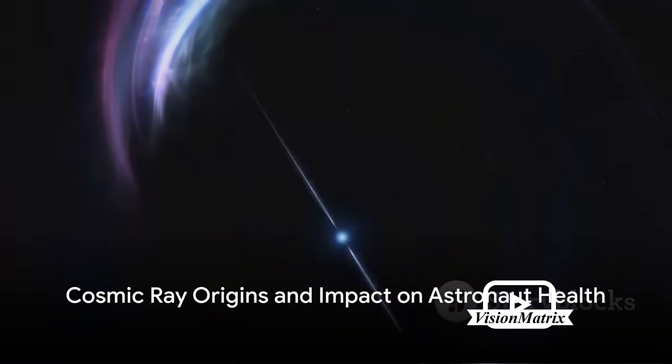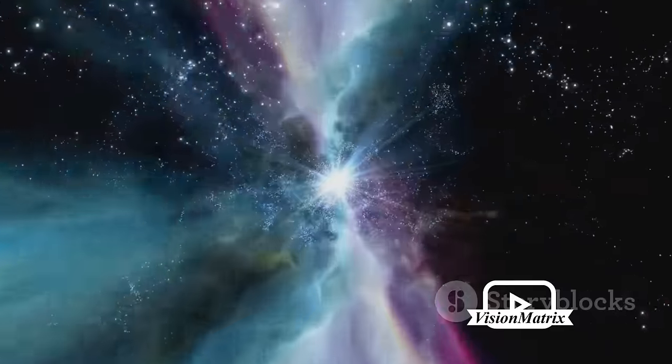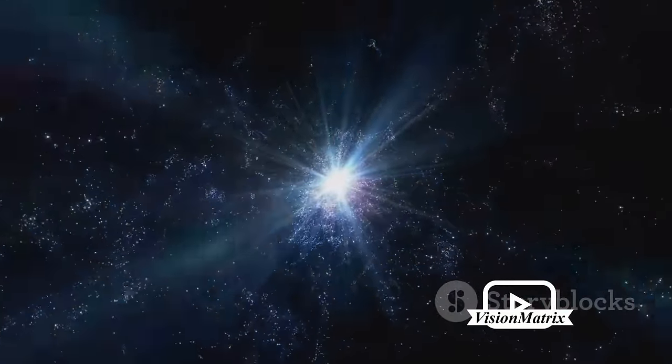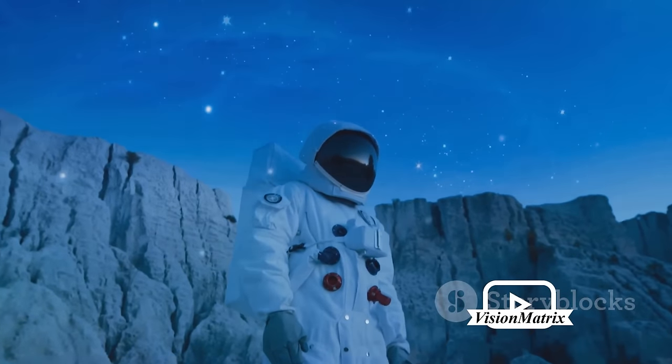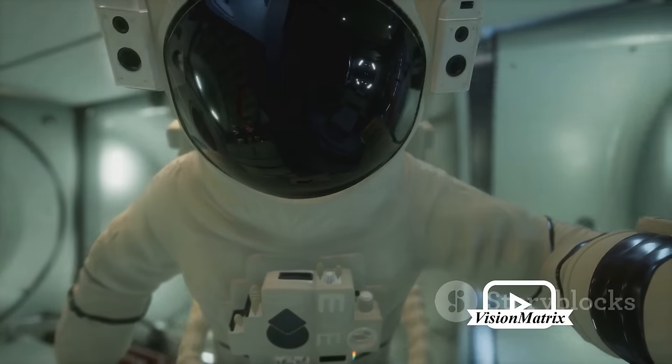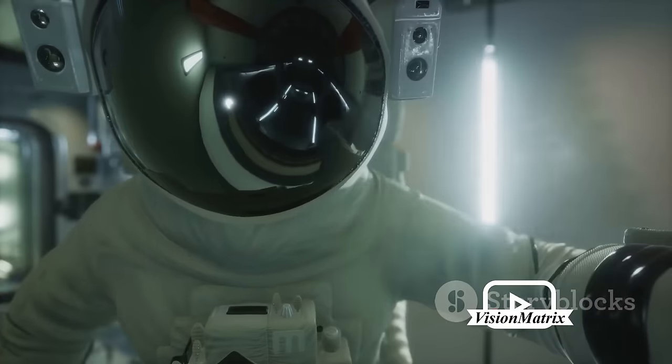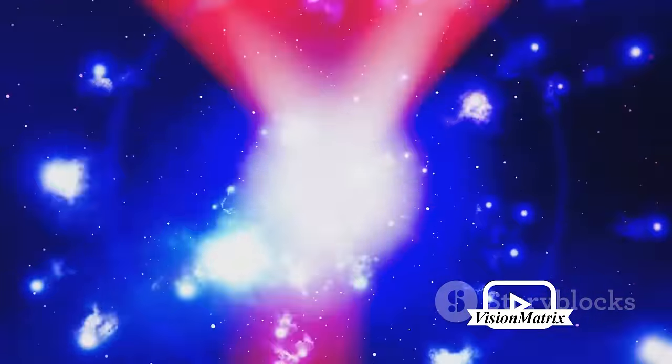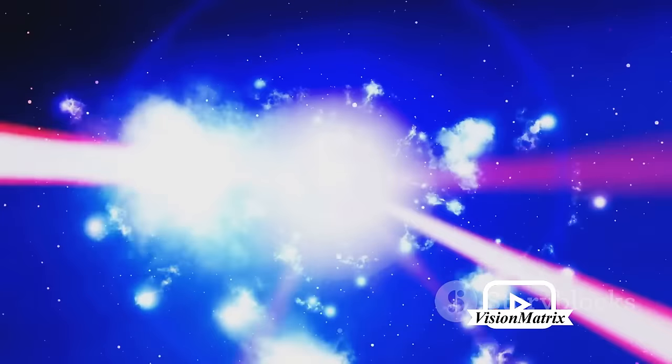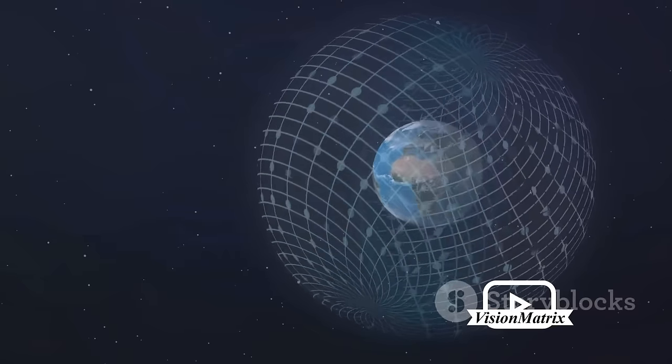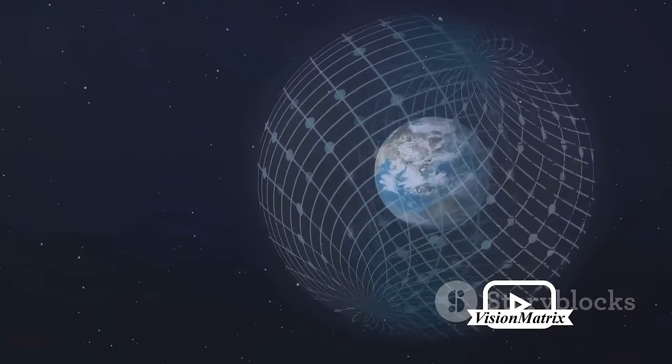Imagine being bombarded by high-energy particles from outer space. That's what astronauts deal with on a daily basis. These particles, known as cosmic rays, originate from energetic events in the cosmos. Supernovae, or exploding stars, are one such event, propelling atomic particles at nearly the speed of light across the universe. Cosmic rays aren't just an abstract space phenomenon, they present a real and tangible threat to astronaut health. Exposure to these high-energy particles can lead to a range of health complications, from acute radiation sickness to long-term effects like cancer. To protect astronauts, we employ sophisticated shielding technologies. These include materials like lead and polyethylene, which can absorb or deflect these rays. Yet these measures aren't perfect, and the threat of cosmic rays remains one of the significant challenges in human space exploration. So, as we can see, space travel isn't just about hopping on a spaceship and taking off. There are cosmic hurdles to overcome.